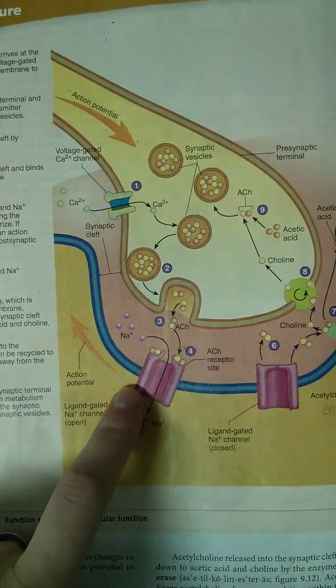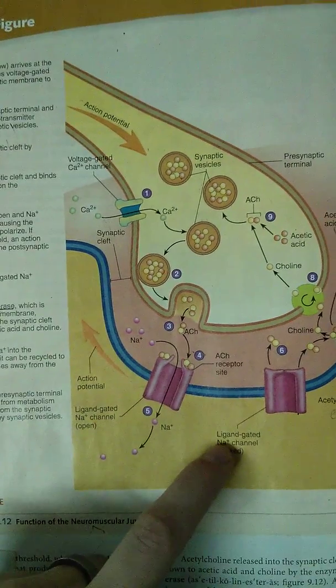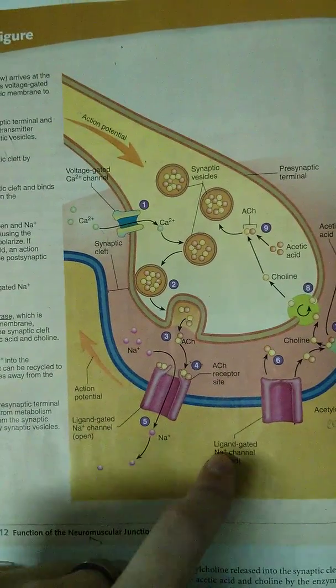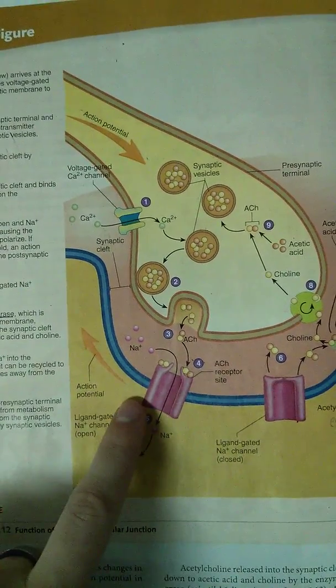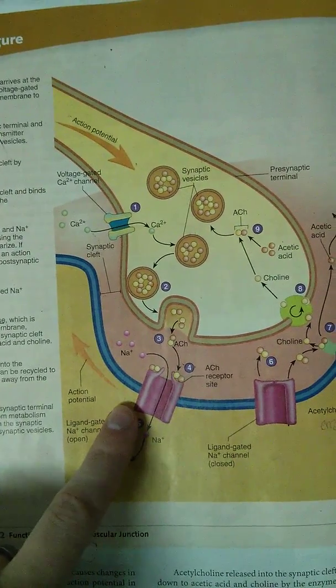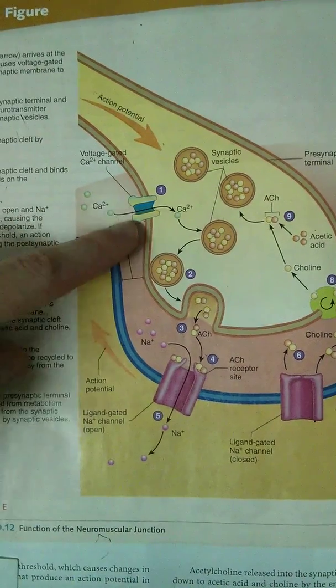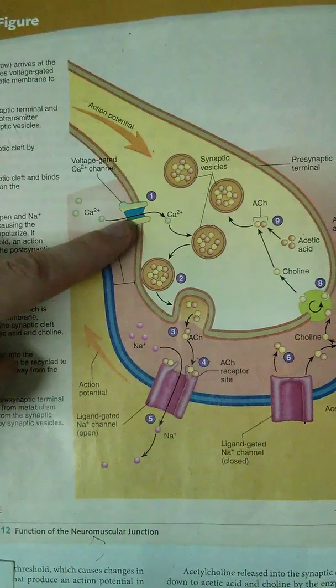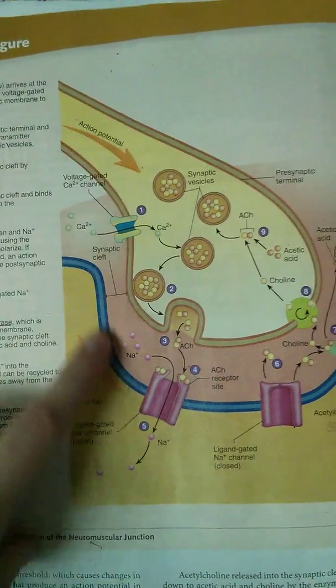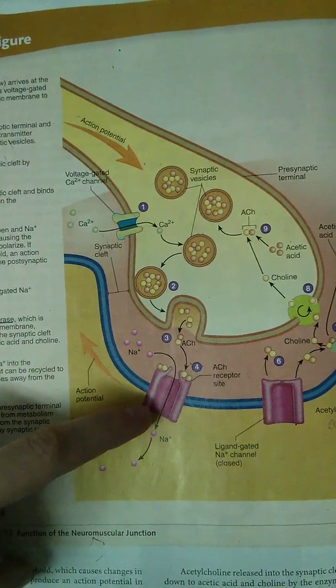which another word for ligand is neurotransmitter or chemical. So a ligand-gated means that it opens in response to a chemical. This channel was a voltage-gated, which means it opens in response to electrical current. So this one opens in response to a chemical.